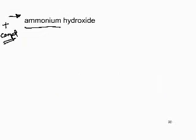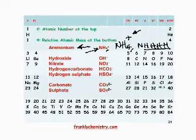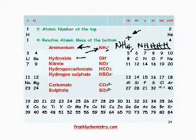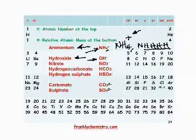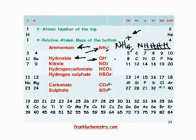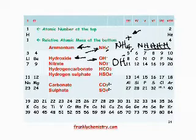The ammonium ion goes along with the hydroxide ion. Hydroxide is not an element; it's another compound ion that you find on the back of the periodic table. The formula of the hydroxide ion is OH, and its charge is minus.